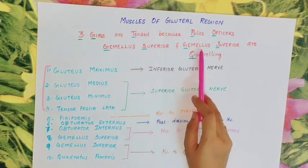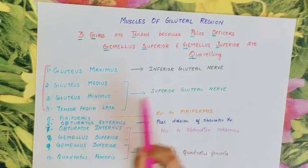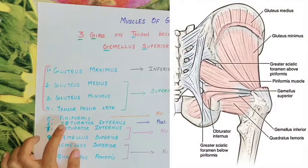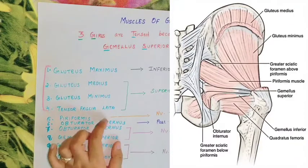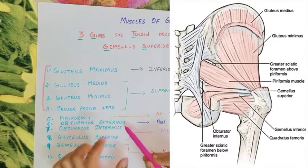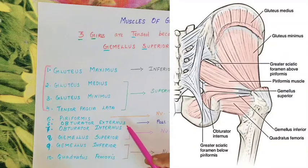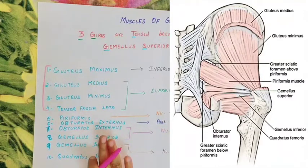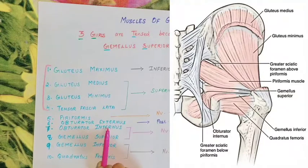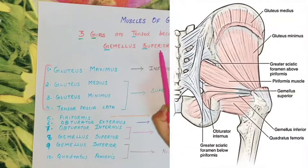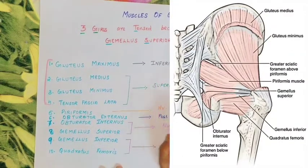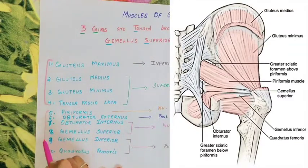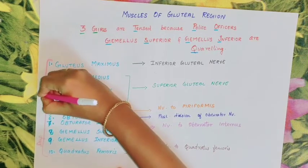The police officers represent P — Piriformis muscle. The offices represent 2 O's — Obturator Externus and Obturator Internus. Note: in some texts, Obturator Externus is included in the gluteal region, though it is also part of the medial compartment of the thigh. Gemellus Superior and Gemellus Inferior are the quarreling police officers. Quarreling represents Q — Quadratus Femoris. These are the 10 muscles, with muscles 5 through 10 forming the deep group.